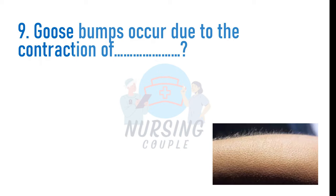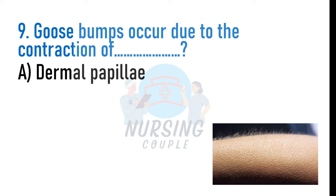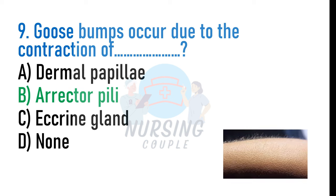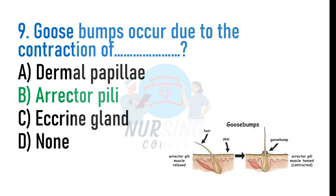Goosebumps occur due to the contraction of: A. Dermal papilla, B. Erector pili, C. Eccrine gland, D. None. The answer is B: Erector pili. Goosebumps occur when tiny muscles in our skin's hair follicles called erector pili muscles pull hair upright. This muscle also participates in thermoregulation.